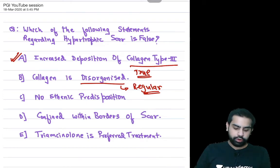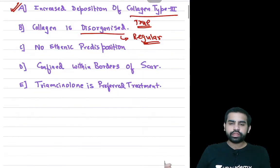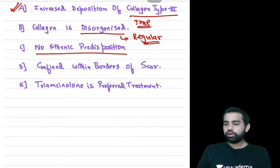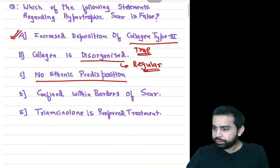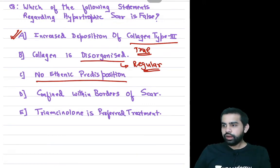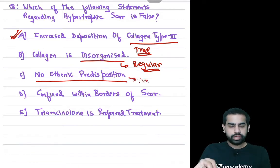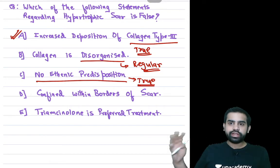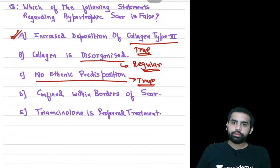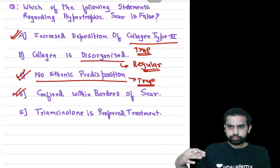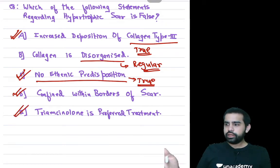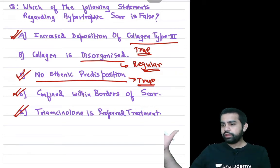Is there any predisposition to ethnicity in hypertrophic scar — true or false? Yes, C is a true statement. But please understand, predisposition to ethnicity is more associated with keloid, not so much with hypertrophic scar. Option D — confined within the borders of the scar — is also true. The hypertrophic scar is confined within the boundaries, whereas keloid extends beyond. Triamcinolone as preferred treatment is also a true statement.